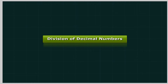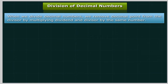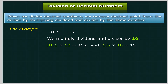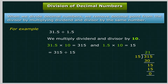Division of Decimal Numbers: When we divide decimal numbers, we remove the decimal point from the divisor by multiplying the dividend and divisor by the same number. For example, 31.5 divided by 1.5 — we multiply dividend and divisor by 10. 31.5 multiplied by 10 equals 315, and 1.5 multiplied by 10 equals 15, so 315 divided by 15 equals 21.